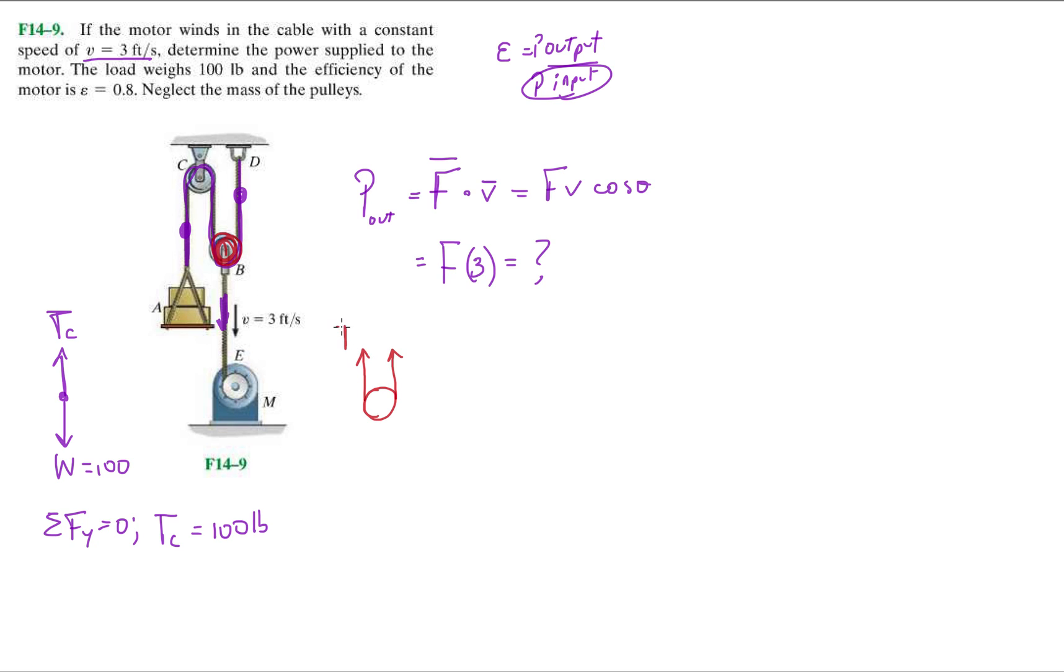So, that means I have T here, I have T here, and if we keep it consistent, we say, okay, this is TC, this is TC, right? And then, it's getting pulled down, so there's a tension going down, downwards, which we can call TB.